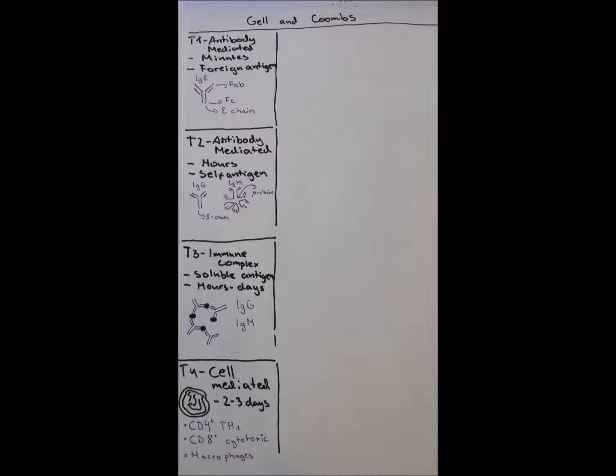Type 1 has immunoglobulin E because of the epsilon chain on the heavy chain. Type 2 uses immunoglobulin G and M, respectively gamma and mu chains. Type 3 also uses G and M, and type 4 hypersensitivities use CD4-positive T-helper-1 cells and cytotoxic CD8-positive T-cells and macrophages.